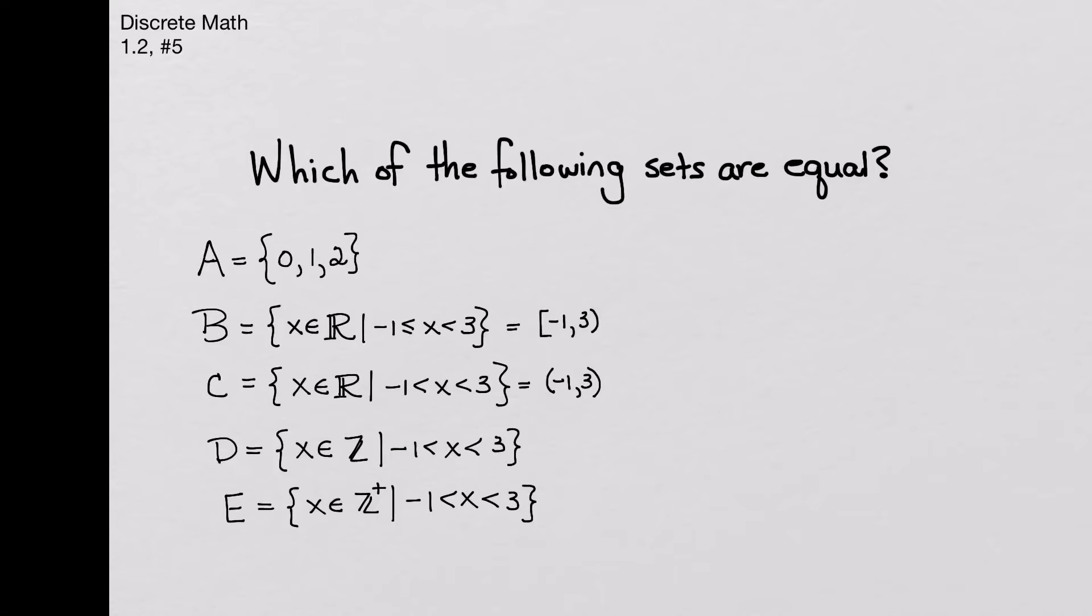So I'm going to write the elements of this set, and I can list them in roster notation because there's a finite number of them. We're not including the negative 1, so we start at 0, 1, and 2, and we stop there because the 3 is not included. Now this is equal to set A, so there you go. A and D are equal to each other.